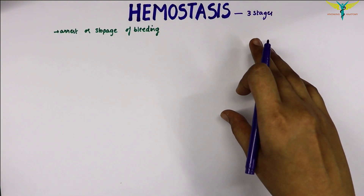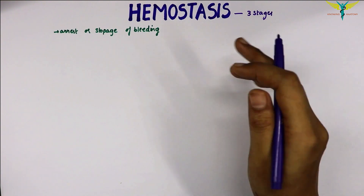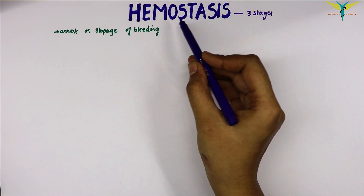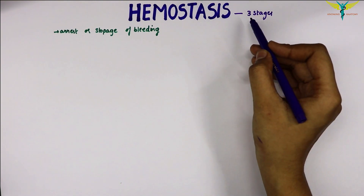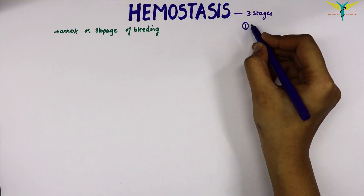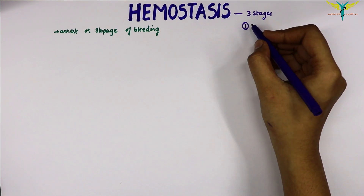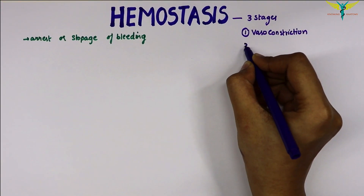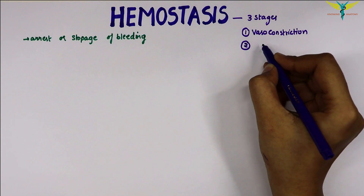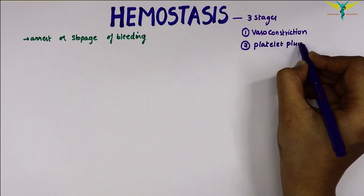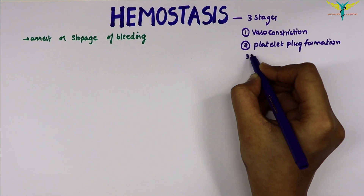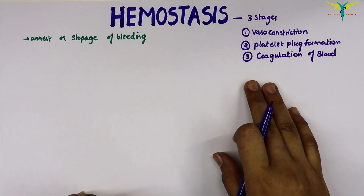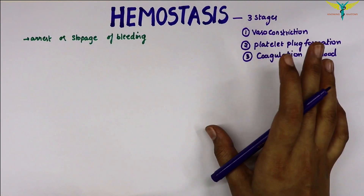Hemostasis contains three stages. When the blood vessel is injured, the injury initiates a series of reactions resulting in the process of hemostasis. The first stage is vasoconstriction, the second stage is platelet plug formation, and the third stage is coagulation of the blood.